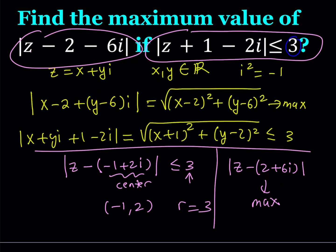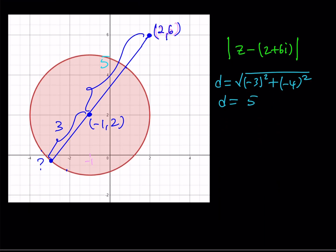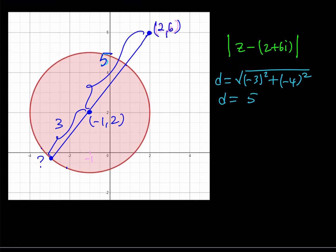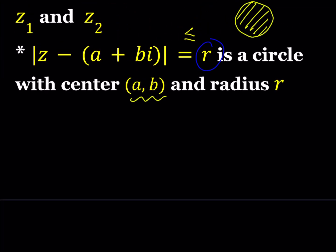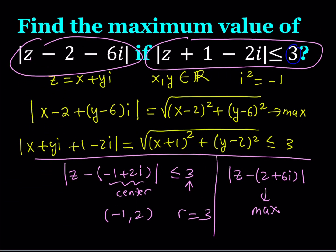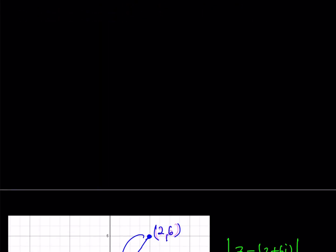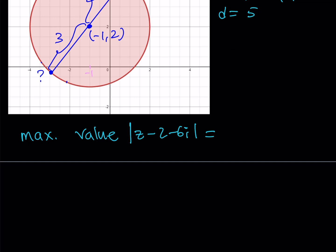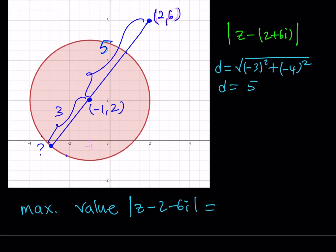The radius of the circle is 3. Adding that to the distance of 5 gives the maximum distance. So the maximum value of |z minus 2 minus 6i| equals 3 plus 5, which is 8.